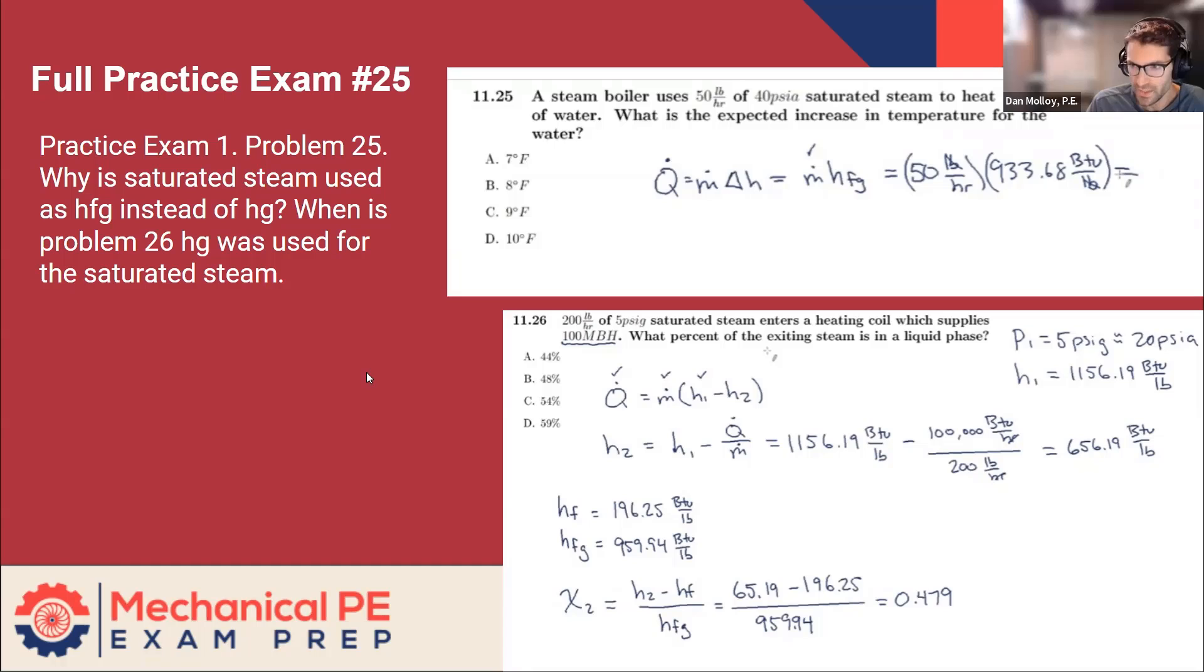So slightly different problems here. I think 25 was probably the more interesting one, steam boiler. And in this problem, we're told that the steam coming in is 40 PSIA saturated. So that's a fully defined state. We can find the enthalpy of that steam, we could find HG or HFG. But what's interesting about this problem is we don't know the leaving condition of the steam, it's not given.